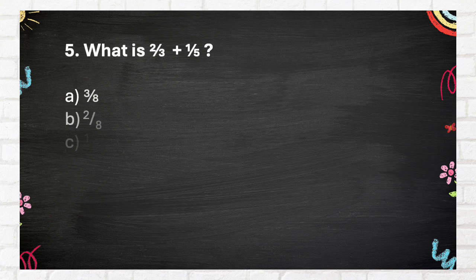Question number 5. What is two-thirds plus one-fifth? Again, what is two-thirds plus one-fifth? A. Three-eighths. B. Two-eighths. C. Thirteen-fifteenths. D. Three-fifteenths.